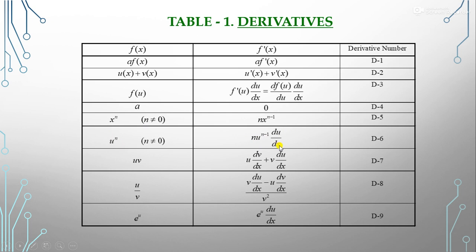For the product rule: d/dx(u·v) = u·dv/dx + v·du/dx. For the division rule: d/dx(u/v) = (v·du/dx − u·dv/dx) / v². For e^u: d/dx(e^u) = e^u·du/dx.